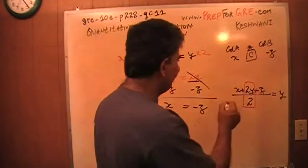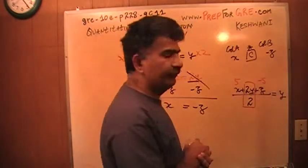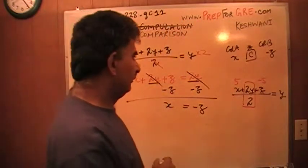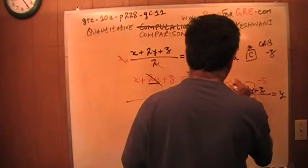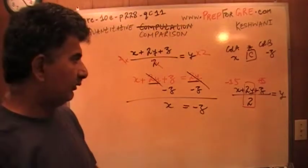If x is 5, z would have to be negative 5. And if x is negative 15, then z would have to be positive 15, and so on and so forth.